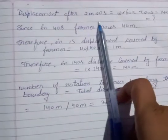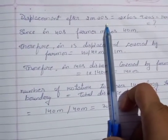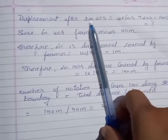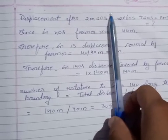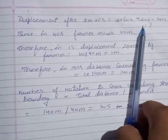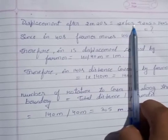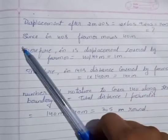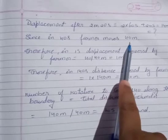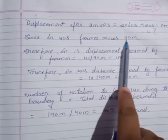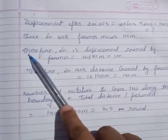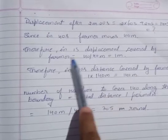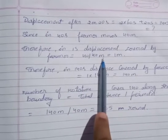We need to find the displacement after 2 minutes 20 seconds. First, convert to seconds: 2 minutes equals 2 times 60, which is 120 seconds, plus 20 seconds equals 140 seconds total. In 40 seconds the farmer covers 40 meters, so in one second the farmer covers 40 divided by 40, which is 1 meter per second.